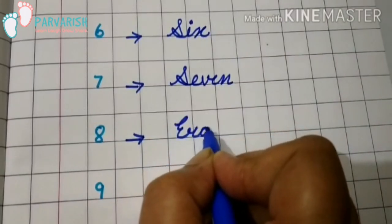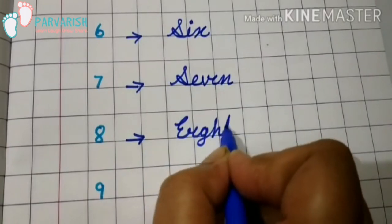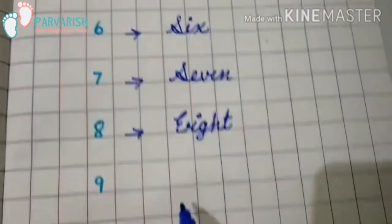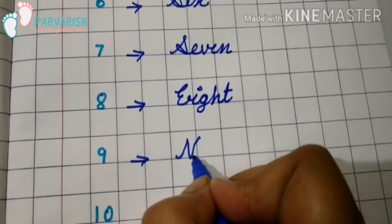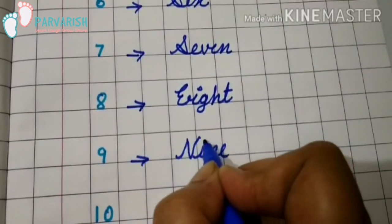now you have to write 8, E, I, G, H, T, 8. 9, N, I, N, E, 9.